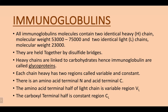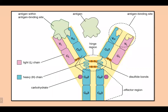The heavy chain has two regions called variable and constant. There is an amino acid terminal N and a carboxyl terminal C. The amino acid terminal half of the light chain is the variable region VL, and the carboxyl terminal half is the constant region CL.